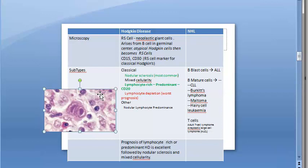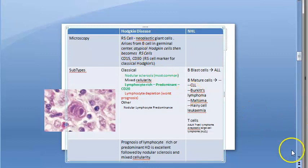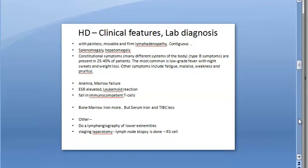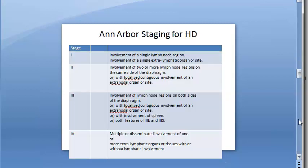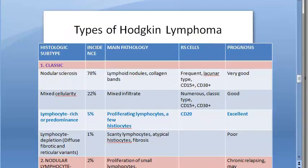The Reed-Sternberg cell is one of the diagnostic parameters of Hodgkin disease. The prognosis of Hodgkin disease is much better than non-Hodgkin lymphoma. We previously covered clinical features, introduction to staging, and the Ann Arbor staging system. Now we move on to the types of Hodgkin lymphoma.